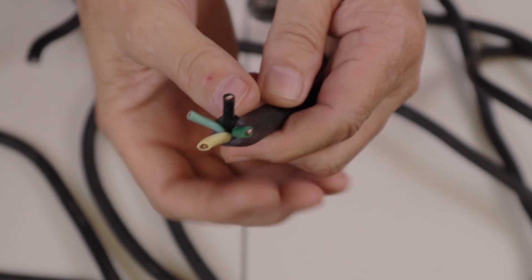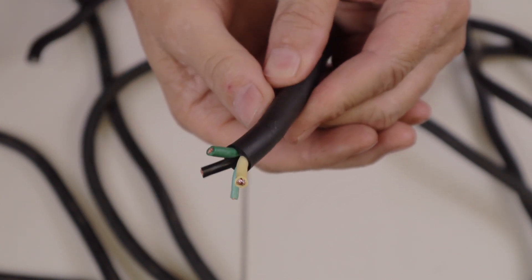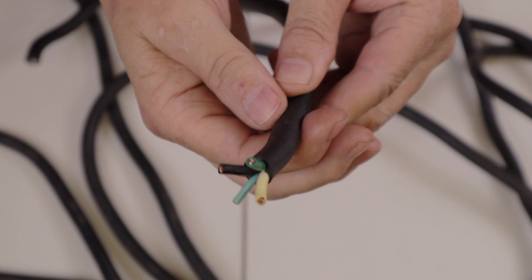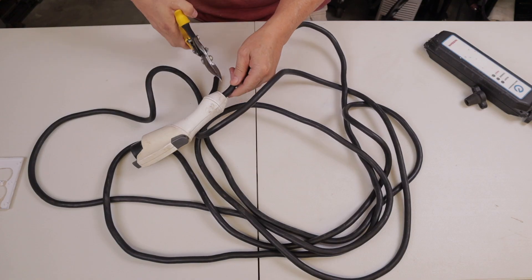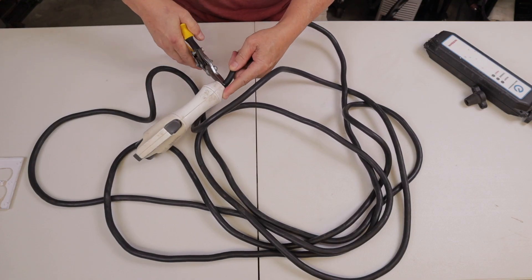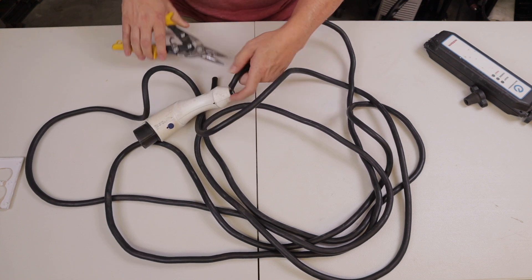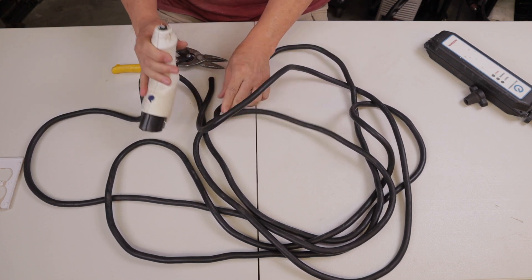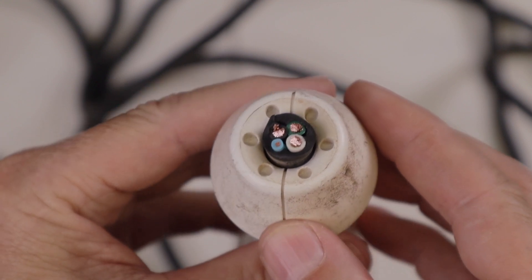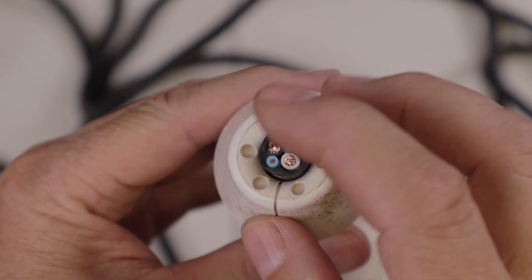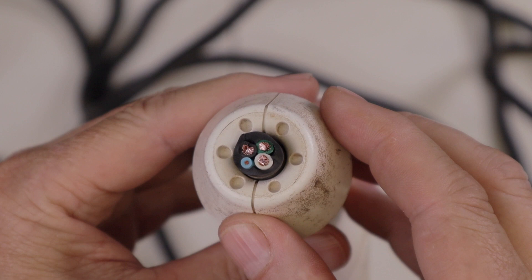4 wires. That might be 12 gauge. That's pretty thick. A little thicker than I expected. Cut this other end off of here. So this might be good for a 20-amp extension cord. I'll measure a piece of that wire and double-check it.